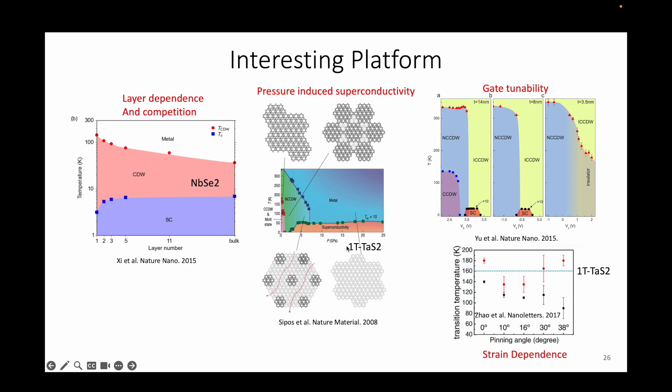Electric field can also be applied to the same material to induce superconductivity in the material. And mechanical strain seems to be a tuning parameter for the charge density wave transition. This is only a small subset of interesting phenomena that can be observed in systems with charge density wave.